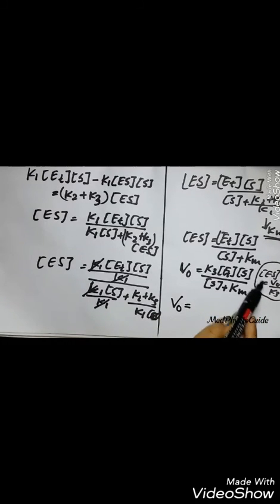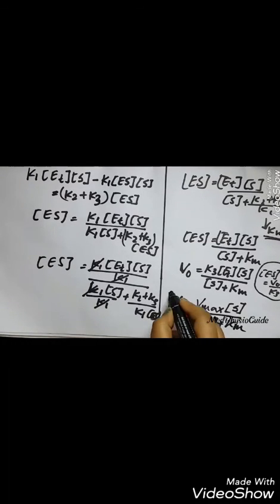If the total concentration of the enzyme is considered, the term ET into K3 should be equal to Vmax or the maximum velocity of the enzyme. Hence, we get V0 is equal to Vmax into concentration of the substrate divided by Km plus concentration of the substrate, which is the Michaelis-Menten equation or the MM equation we are eager to find.